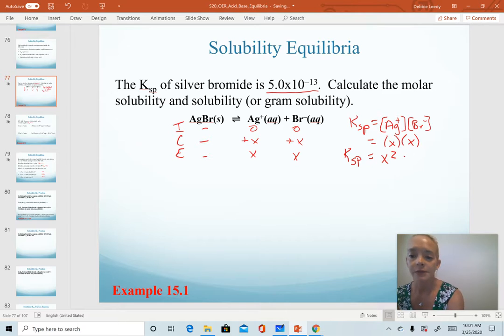Remember that we were given the Ksp value for this salt, and so we can set that equal to 5.0 times 10 to the minus 13. When we're asked to solve for molar solubility, that is the x value from our ice table.